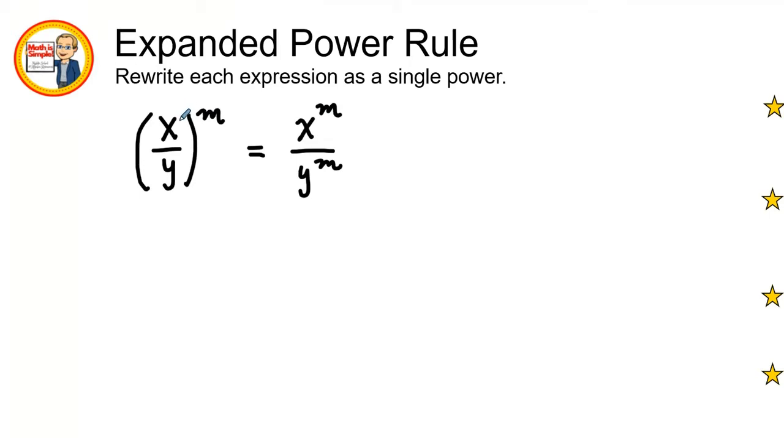Remember this x right here has an exponent of one, an imaginary one, and we are going to be multiplying those numbers together. That was in the expanded rule.